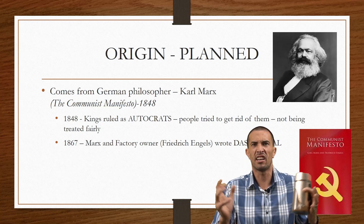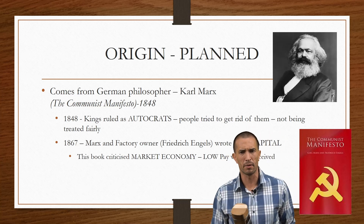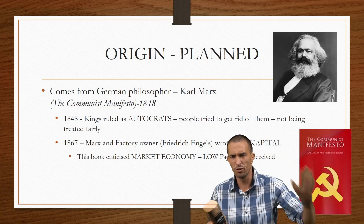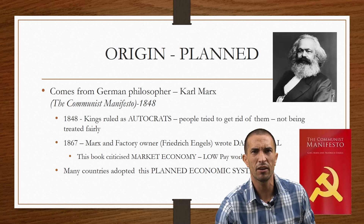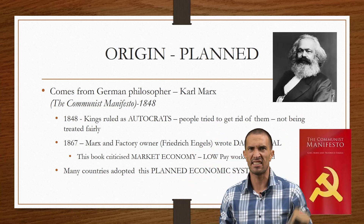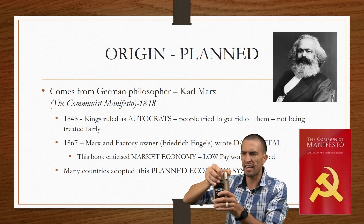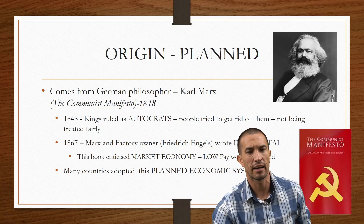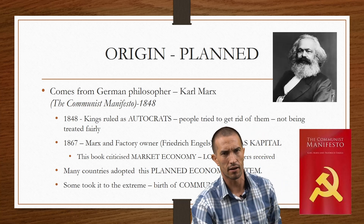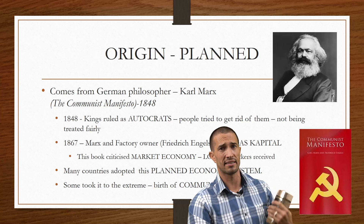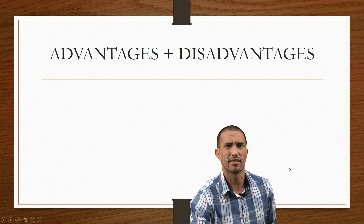Karl Marx and factory owner Frederick Engels wrote another book called 'Das Kapital.' This book argued that the market economy does not work — pay was too low, workers were mistreated and abused. There was a public outcry, and they said let's control what goes in and out. This led to the adoption of the planned economic system, and in some countries it went to the extreme — and the birth of communism began.